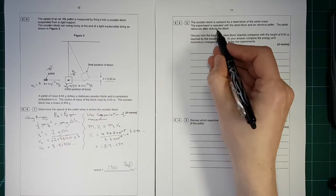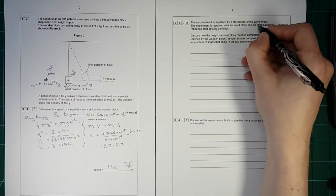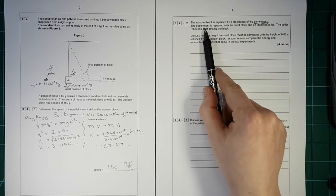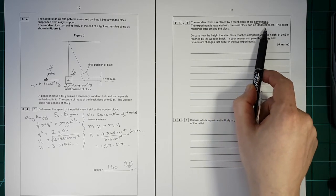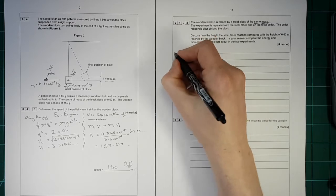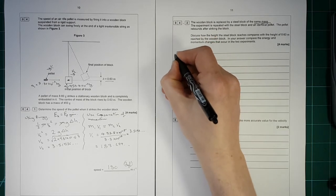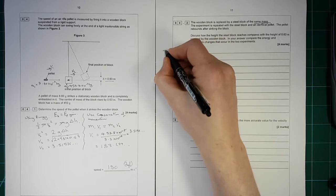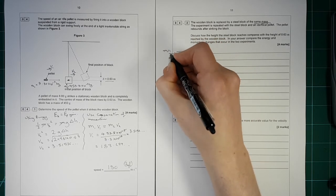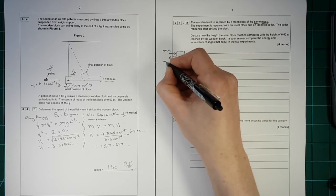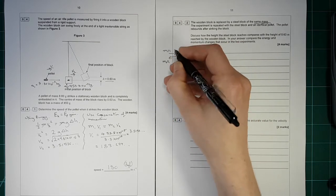The wooden block is replaced by a steel block of the same mass. Same mass. The experiment is repeated with the steel block and identical pellet. The pellet rebounds after striking the block. Okay, so the pellet, instead of coming in and embedding, is now bouncing off. So it starts M1V1 and it bounces off. Say it goes the same speed, M1V1 in the opposite direction. So that is, its momentum will be negative there.